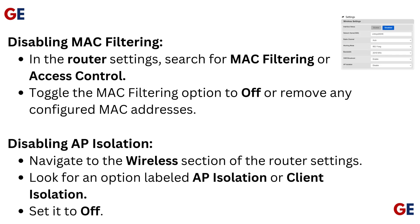Disabling MAC filtering: In the router settings, search for MAC filtering or access control. Toggle the MAC filtering option to off or remove any configured MAC addresses. Disabling AP isolation: Navigate to the wireless section of the router settings, look for an option labeled AP isolation or client isolation, and set it to off.